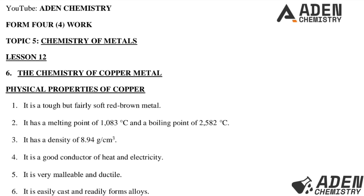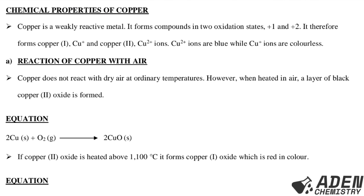Number four, it is a good conductor of heat and electricity. Remember copper is a metal, and metals are good conductors of heat and electricity because of the presence of delocalized electrons. Number five, it is very malleable and ductile — it can be easily cast and then reformed into shapes.